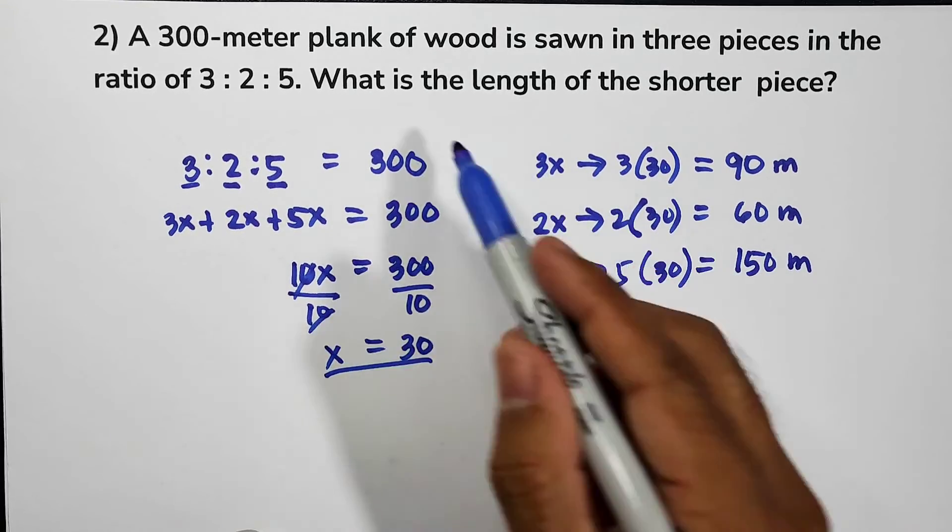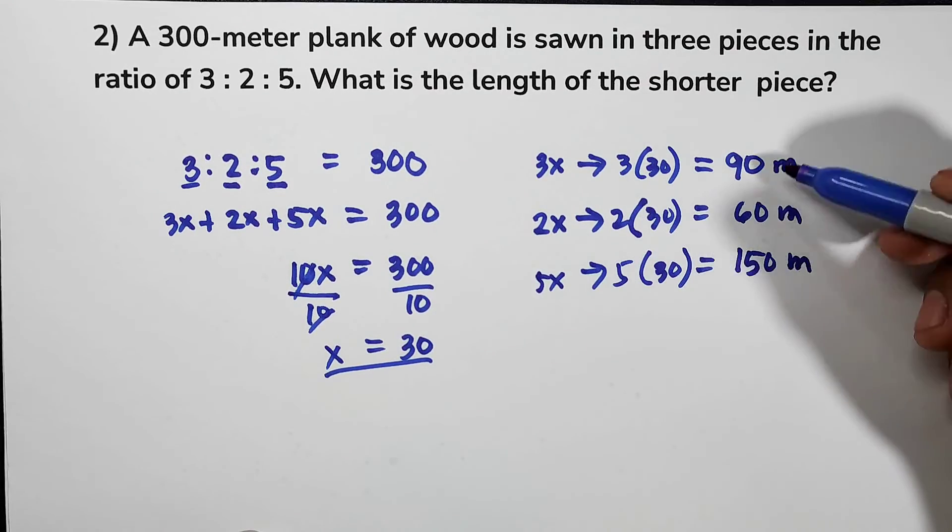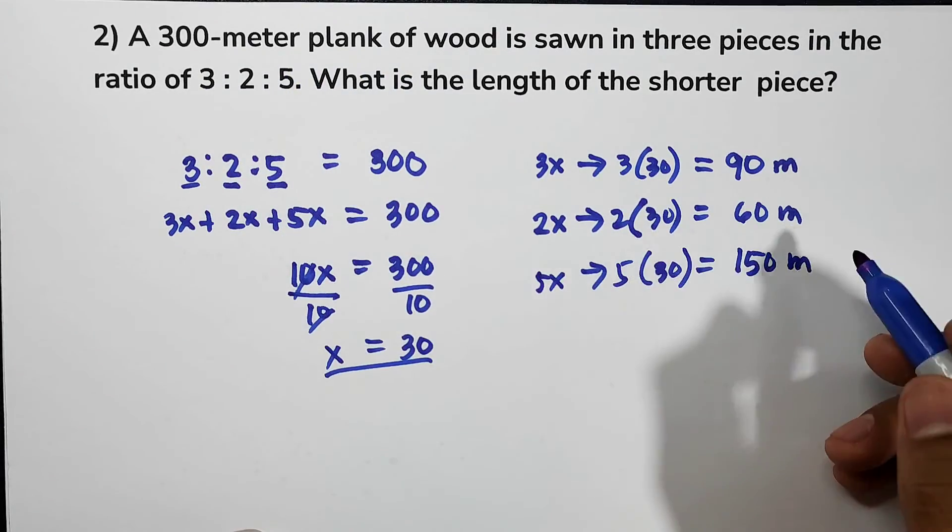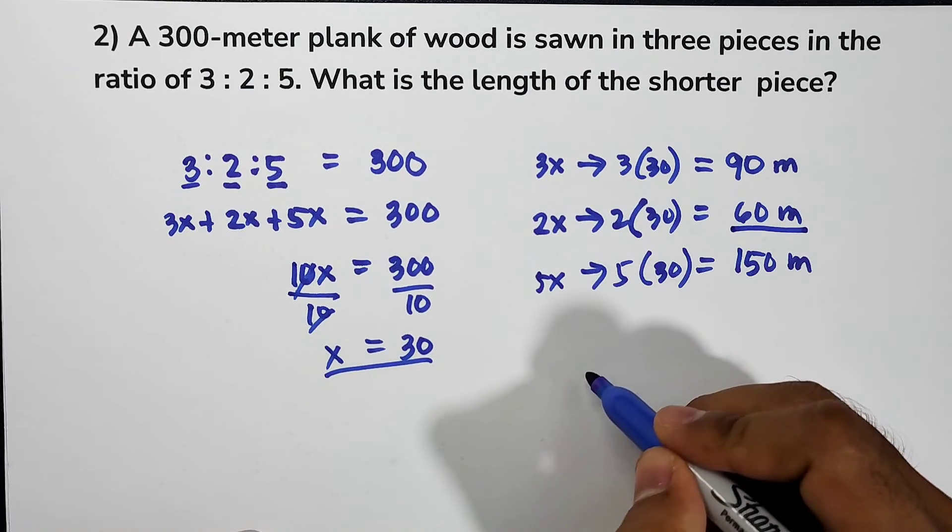But the question is, what is the length of the shorter piece? From the given measurement of the pieces of the plank of wood, the shorter piece is 60 meters. Therefore, the shorter piece of the plank of wood is 60 meters.